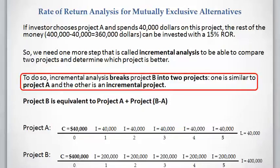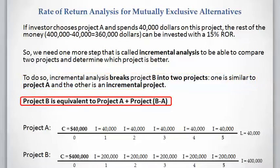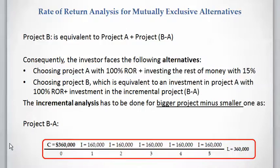In this case, we need incremental analysis, which breaks project B into two parts: one similar to project A, and the other an incremental project, or B minus A. So project B is equivalent to project A plus project B minus A. To evaluate project B minus A, we deduct the project A cash flow from the project B cash flow, so each column's cash flow equals project B minus project A.